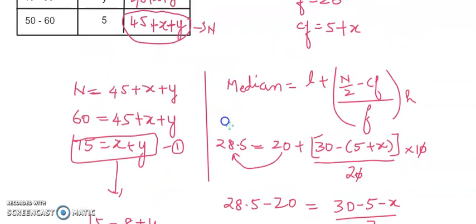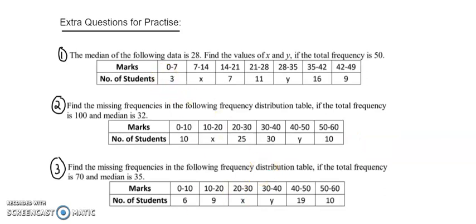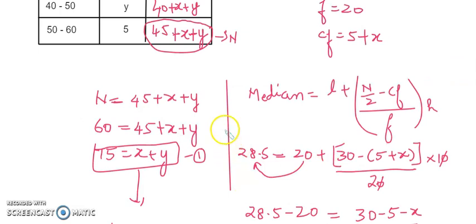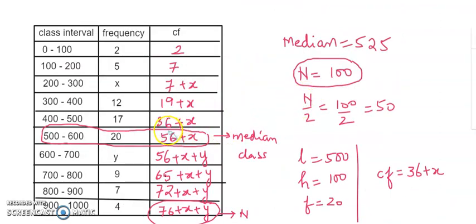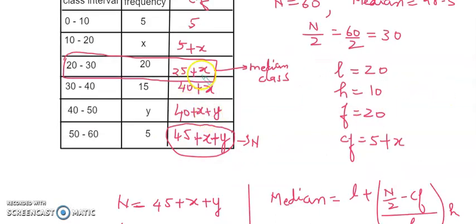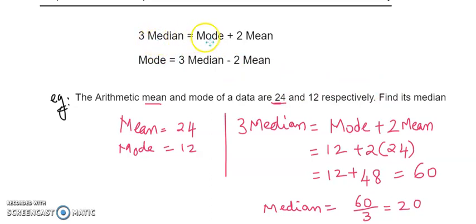This is how we do it: we make two equations — one through the total frequency where the last entry of the cumulative frequency equals n, and one through the median formula. Be very careful to select the CF value that is closest to n by 2. The relationship: 3 times median equals mode plus 2 times mean. We have now seen all the different types of problems related to median of continuous frequency distribution. Thank you.